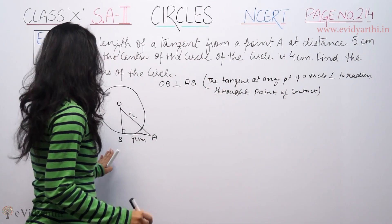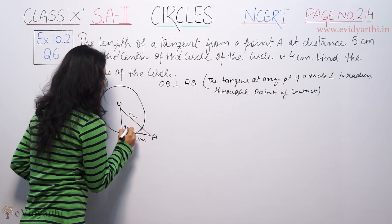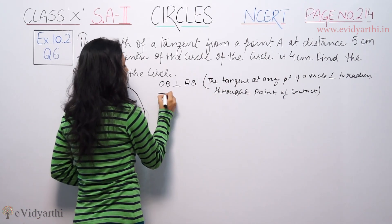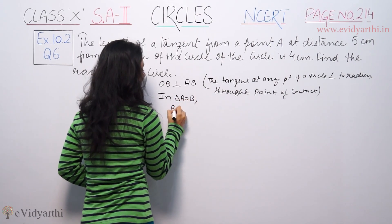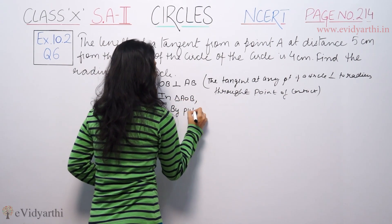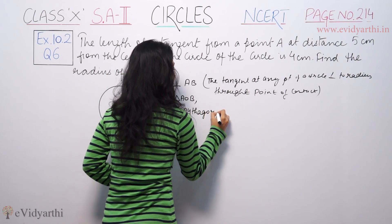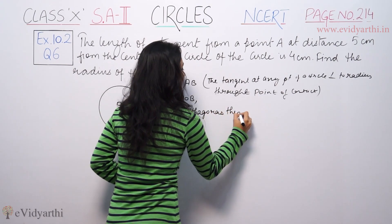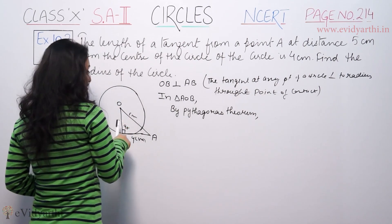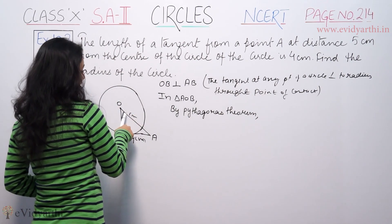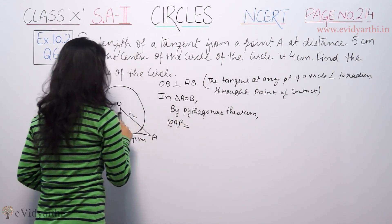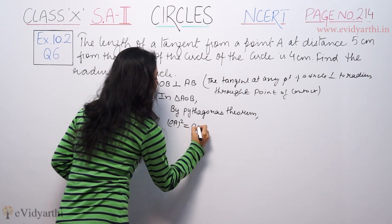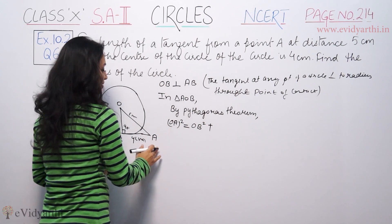So in triangle AOB, we apply Pythagoras theorem: hypotenuse squared is equal to perpendicular squared plus base squared. Hypotenuse means OA, so OA square is equal to OB square plus AB square.